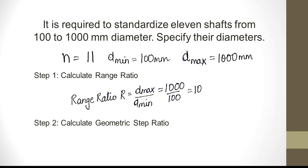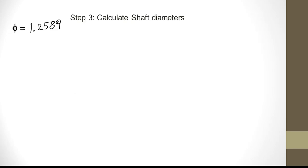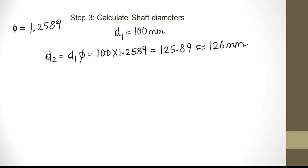1000 upon 100 turns out to be 10. The geometric step ratio, symbol phi, is equal to R raised to 1 upon (N minus 1), which is 10 raised to 1 upon (11 minus 1), so 10 raised to 1 upon 10, which turns out to be 1.2589. The first diameter D1 is 100 mm.